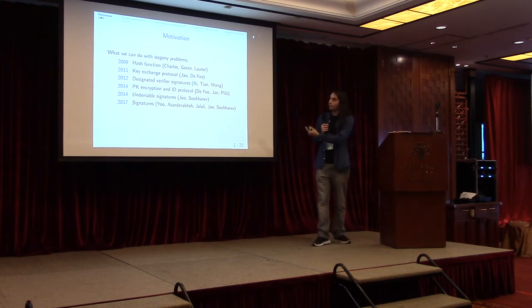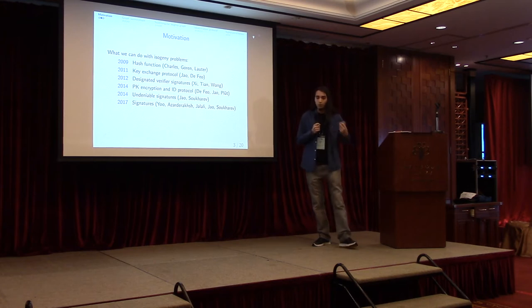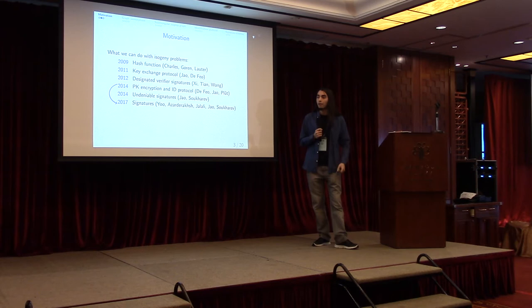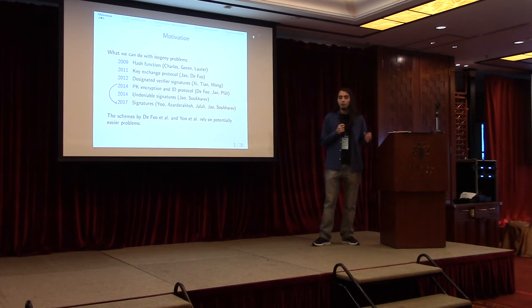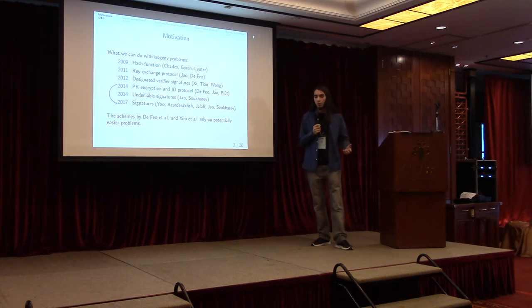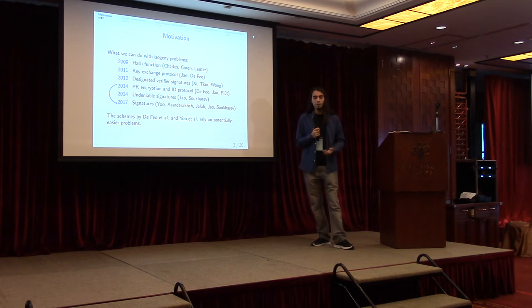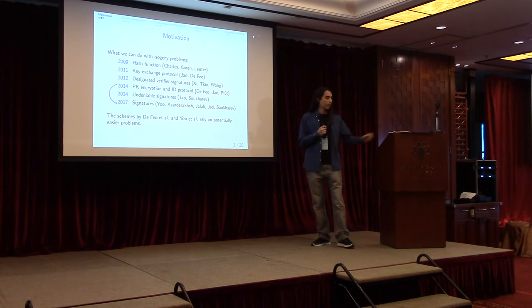In particular, we already have ID protocols and signatures, and we're building new ones. So why? The answer is that the signature scheme that already exists actually relies on the ID protocol that already exists, and they share the same issue. It is that they rely not on the pure isogeny problem, but on a modified problem that gives some extra information to the attacker. This is potentially an easier problem. So what we are trying to achieve in our paper is to build ID schemes and then signatures that rely on the pure problem without giving any extra information.